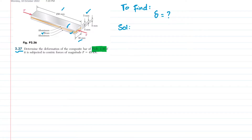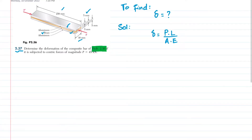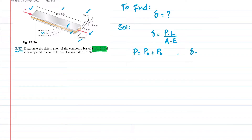We have to find delta, the deformation. As we know, delta = P·L / (A·E). The applied load P is compressive, and this load is shared between the aluminum layers and the brass layer. The deformation in each layer will be the same, so delta_aluminum = delta_brass.